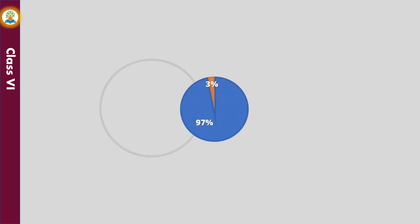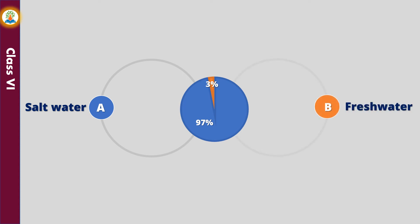About 97% of the water present on earth is salt water found in the oceans. It is not suitable for human consumption. Less than 3% of earth's water is fresh water, and we need fresh water to survive.